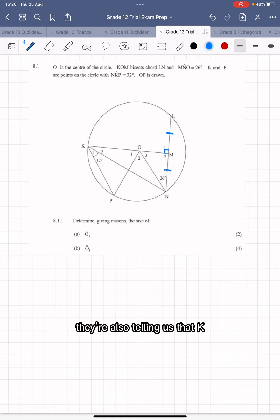They're also telling us that K and P are points on the circle. Angle NKP is 32 degrees, that is indicated over here, we can see that. And OP, which is another radius, has been drawn.